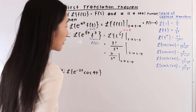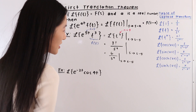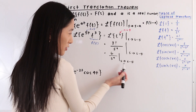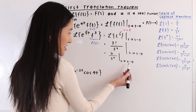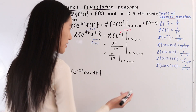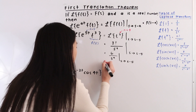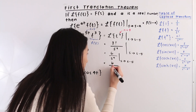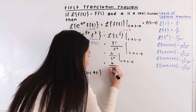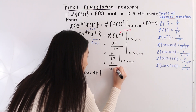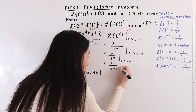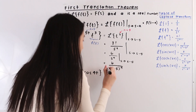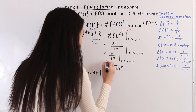Now we simplify: 3 factorial equals 6, giving us 6 over s to the fourth with a shift from s to s minus 5. In our last step, anywhere we see an s we replace it with s minus 5, so our final answer is 6 over s minus 5 to the fourth power.